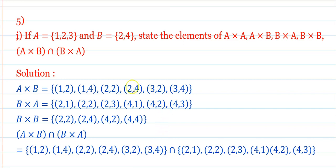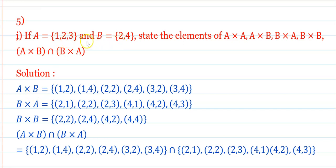Question 5: If A = {1, 2, 3} and B = {2, 4}, find A cross B, B cross A, B cross B, and A cross B intersection B cross A. First, A cross B = {(1,2), (1,4), (2,2), (2,4), (3,2), (3,4)} — that is 3 × 2 = 6 ordered pairs.